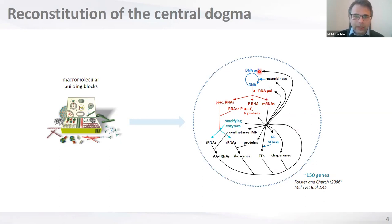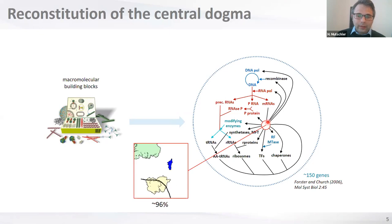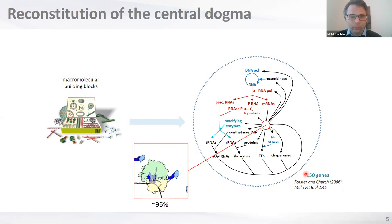It already looks fairly complex — this is even a simplification. You have the entire RNA metabolism needing precursor RNAs for tRNAs and ribosomal RNAs, you need to make ribosomes, charge tRNAs with amino acids, translation factors, chaperones — everything feeding back into protein synthesis. The majority of these genes, about 96% of those 150, are there just to make the proteins themselves.